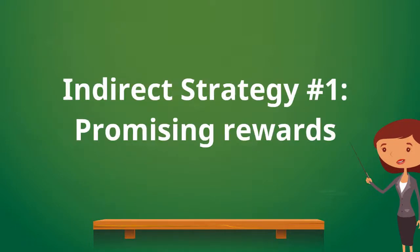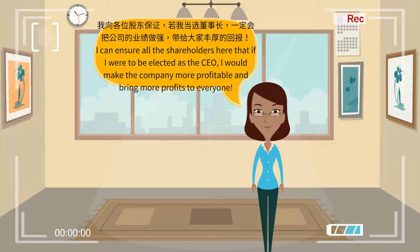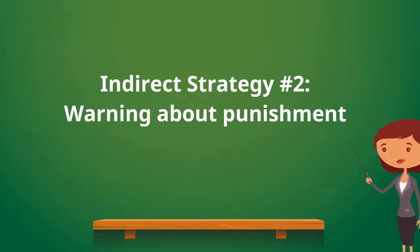The first strategy is promising rewards. To let someone accept your advice, it is sometimes critical to promise them something in return. For example: 我向各位股东保证，若我当选董事长，一定会把公司的业绩做强，带给大家丰厚的回报。